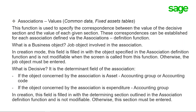The decisive field is the determinant field of the association. If the object concerned is an asset, there are two choices: accounting group or accounting code. If the object concerned is an expenditure, there is only one selection: accounting group. In creation mode, this field is filled in with the determining section from the association definition and is not modifiable; otherwise, it must be entered manually.